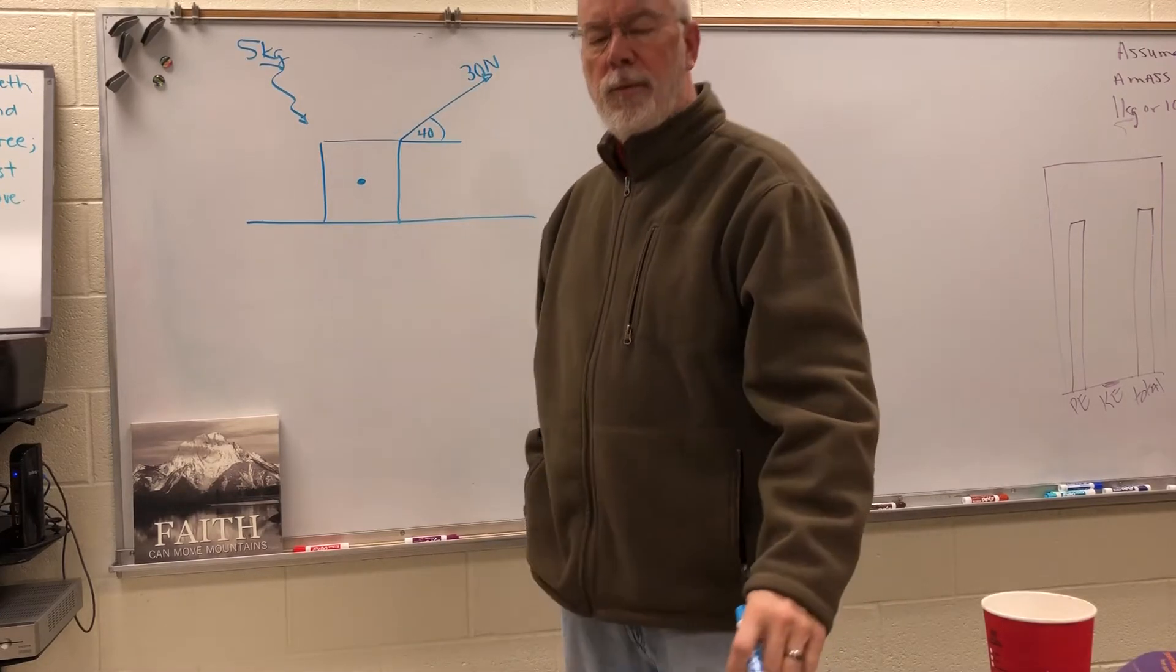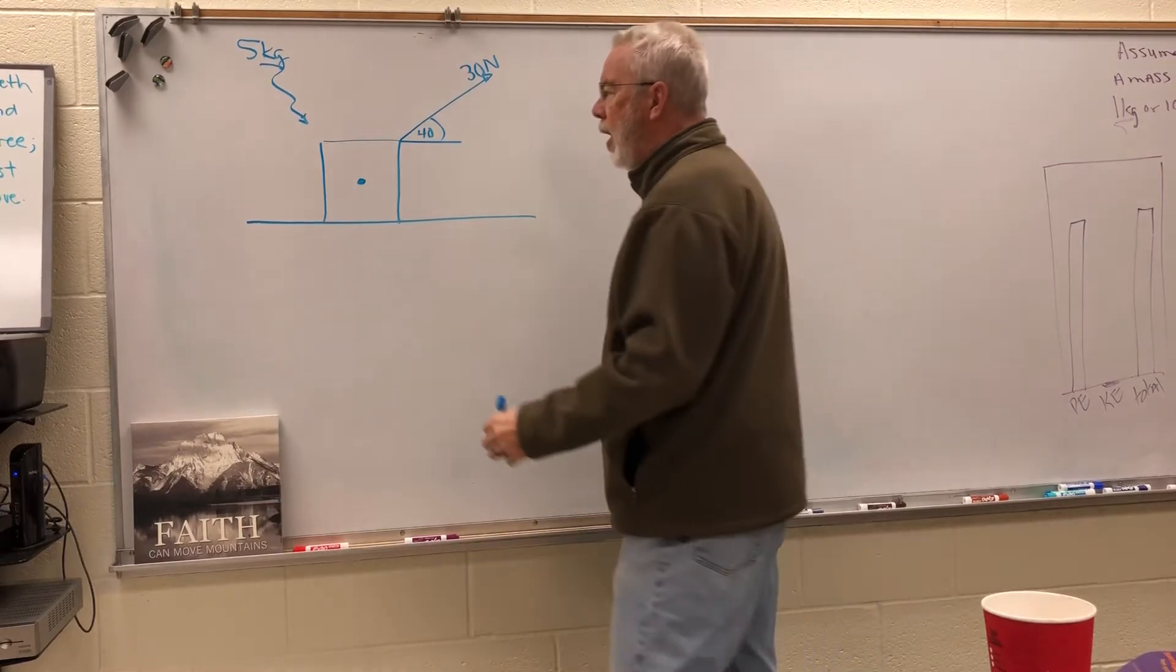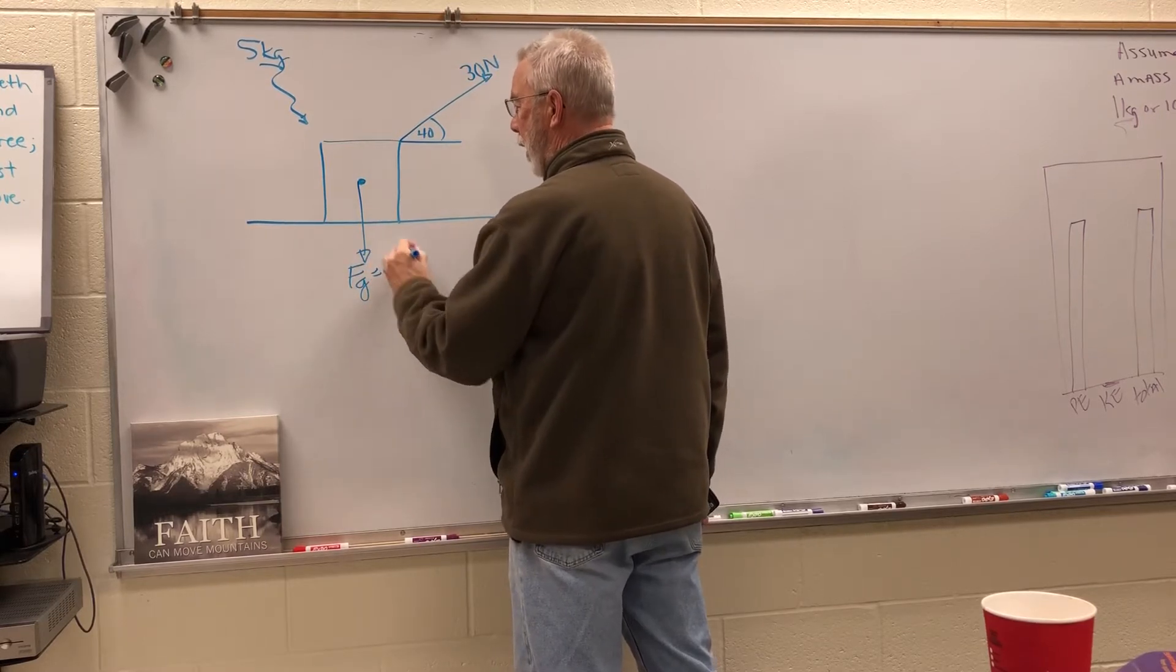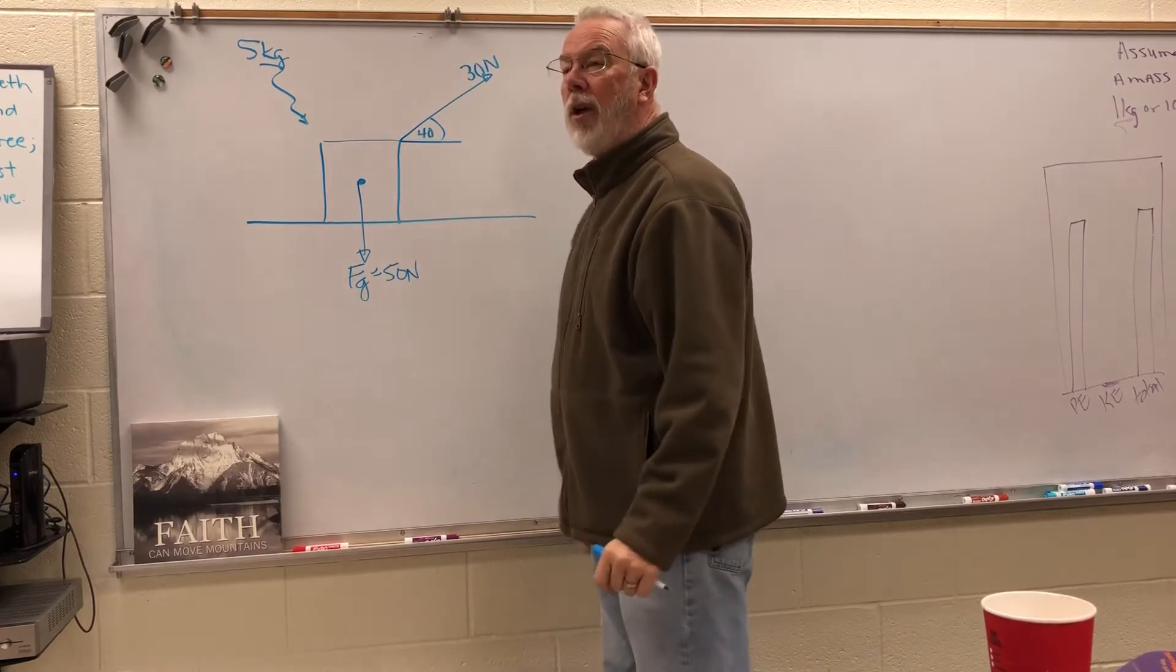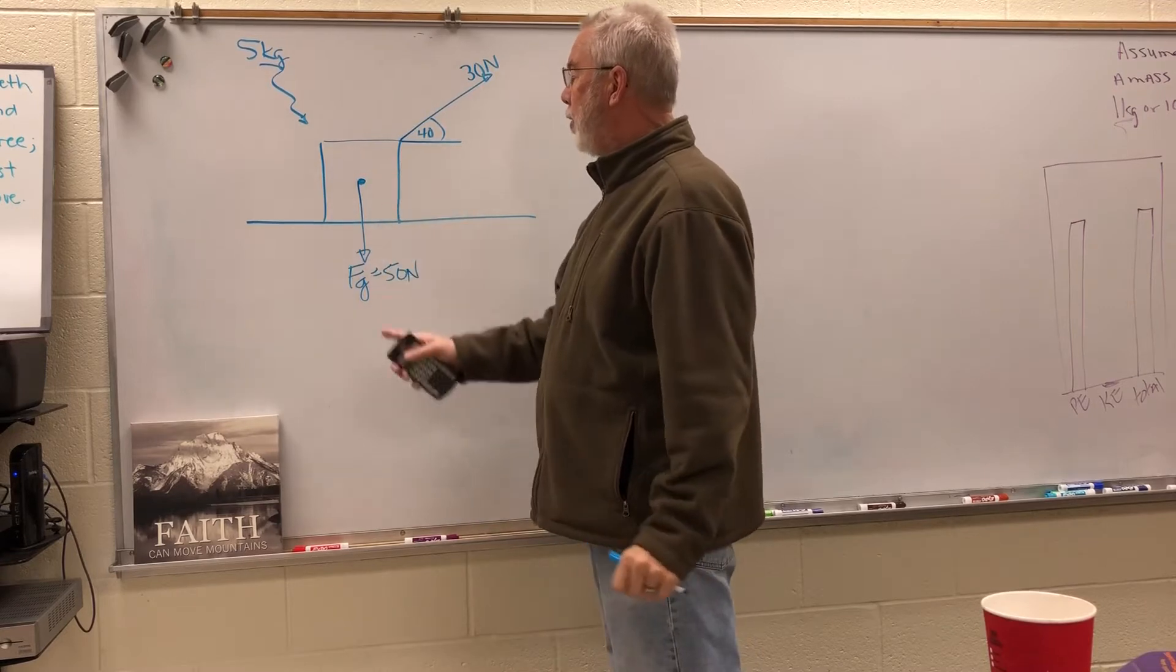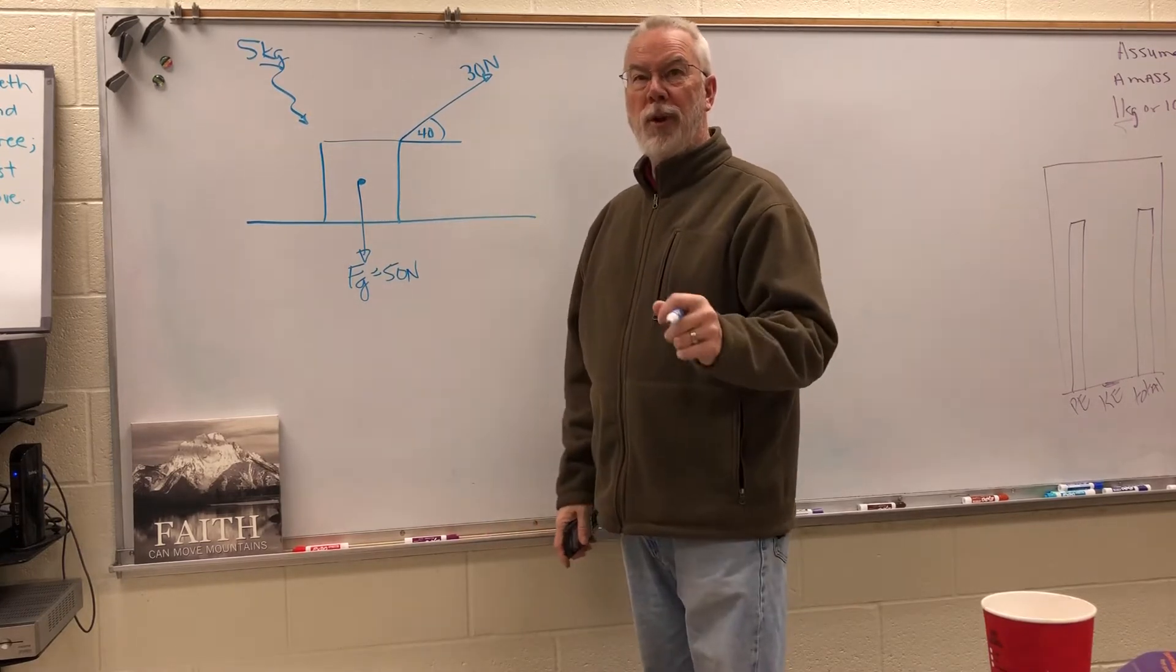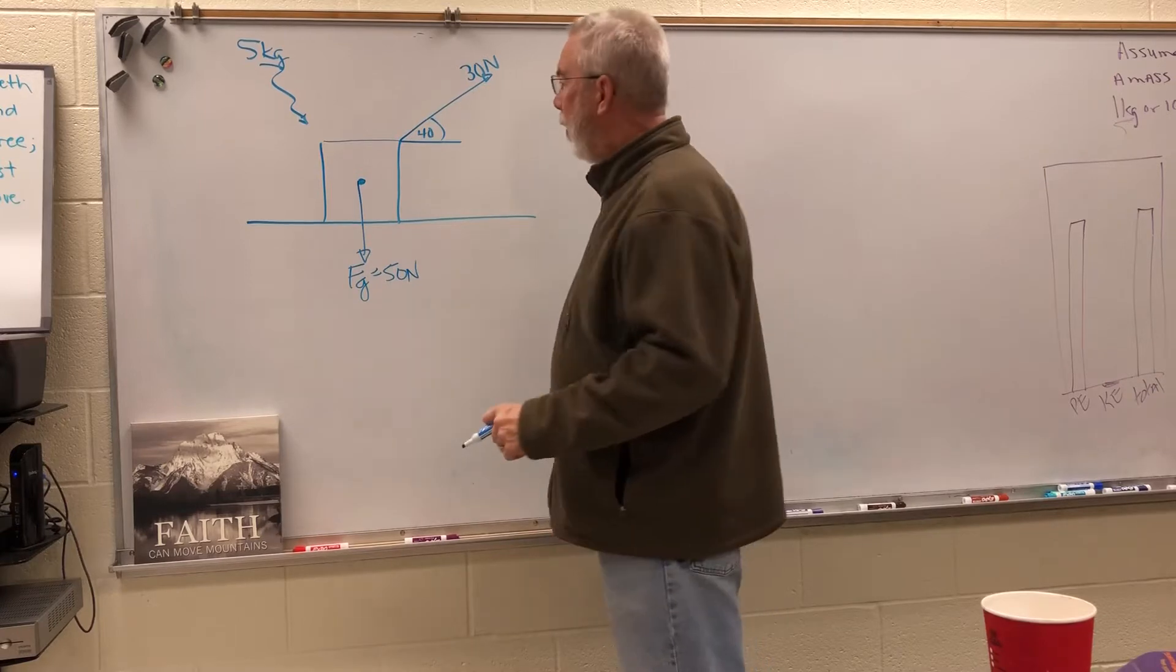When you get a problem like this, you want to start solving for all the forces that act on the box. Right away you should be able to say that F of g is 50. But because this is happening at an angle, you should have a little red flag that says the normal force is not going to be 50 this time because we've got a force acting at an angle. Whenever there's a force acting at an angle, the normal force generally will not be the same.